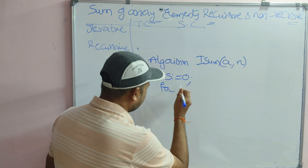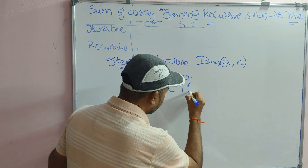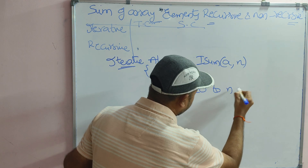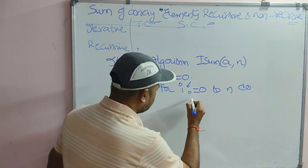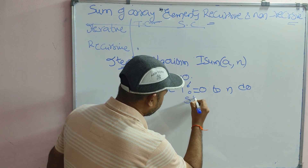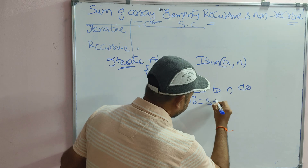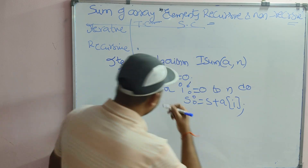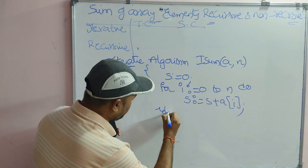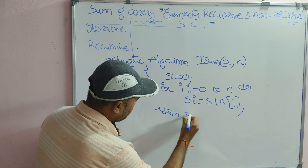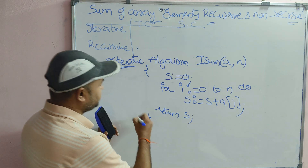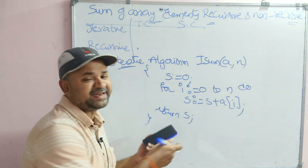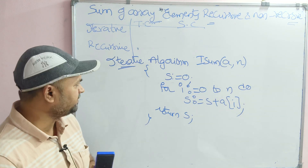The initial value of sum is 0. Next, we have a for loop starting from 0 and continuing up to N. Inside the loop, we calculate the sum: s equals s plus A of i. After that, return or print the s value. Both are correct.